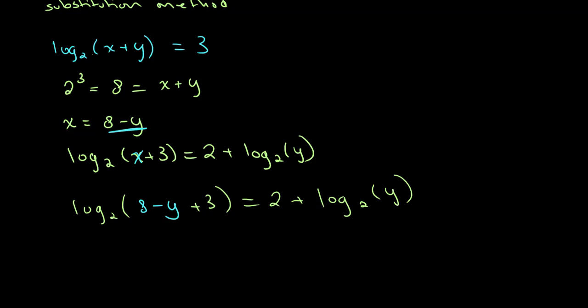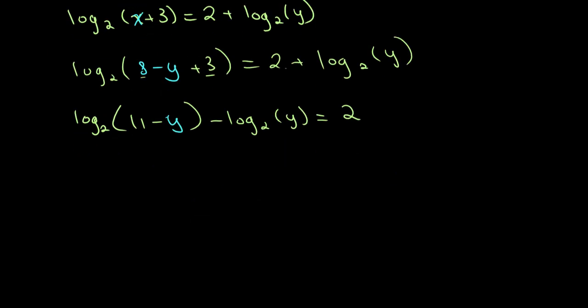So, we get log base 2 of 8 minus y plus 3 is equal to 2 plus log base 2 of y. Now, here, what we need to do is we need to recognize what logarithmic rules we can use. So, first, to do that, let's bring all of our logarithmic equations on the same side. So, we get log base 2 of 11 minus y. So, log base 2 of 11 minus y minus log base 2 of y is equal to 2. And since we're subtracting these two logarithms, we see that we can use the division law. So, we get log base 2 of 11 minus y over y is equal to 2.